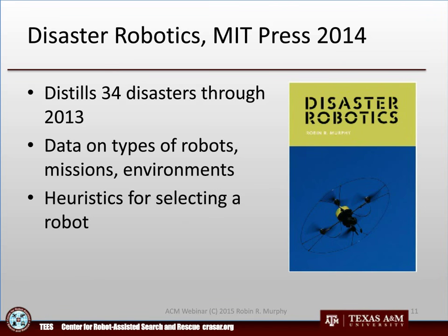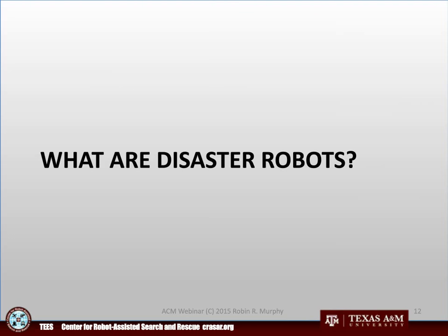One thing about the book: people see the title Disaster Robotics and sometimes misread it. I was at South by Southwest doing a book signing and a person said, 'Oh yes, robots have been disasters, haven't they?' and was looking forward to reading about all the ways they've screwed up. I had to clarify: robots can help with disasters, not make them worse. Well, that is a possibility, as we'll see.